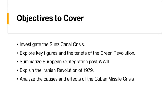Transitioning then to the Green Revolution, which was a period of agricultural innovation that transformed global food production in the mid-20th century, led by figures such as Norman Borlaug. The Green Revolution introduced high-yielding crop varieties, modern farming techniques, and synthetic fertilizers to boost agricultural productivity and alleviate hunger in developing countries. While hailed for its role in averting famine and increasing food security, it also raised concerns about environmental sustainability, genetic diversity, and the concentration of agricultural power in the hands of multinational corporations.